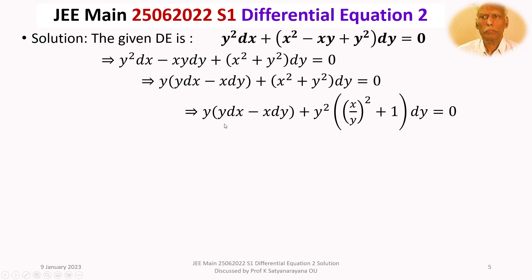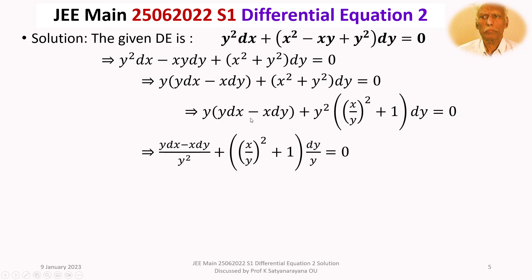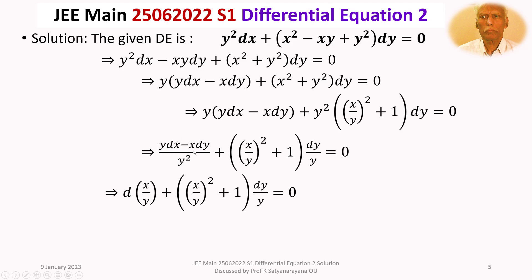To bring y² into the denominator, we divide throughout by y³, giving (y dx − x dy)/y² + ((x/y)² + 1)·(dy/y) = 0. Since (y dx − x dy)/y² is the perfect differential of x/y, this becomes d(x/y) + ((x/y)² + 1)·(dy/y) = 0.